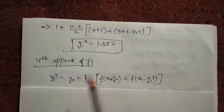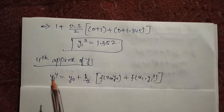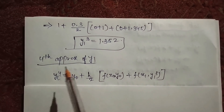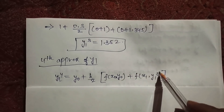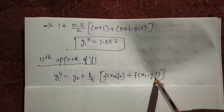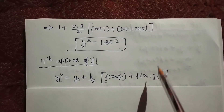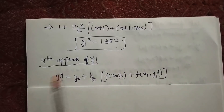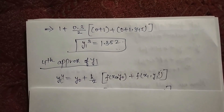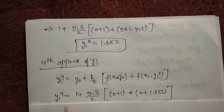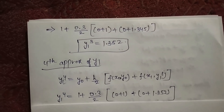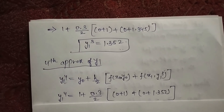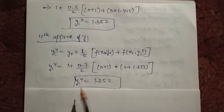Now we find the fourth approximate value — y1 to the fourth. Nothing else changes; only the LHS name increases and the previous approximate value inside the function is updated. We replace y1 squared with y1 cubed in the function. Keep x0, y0, h the same, substitute the function values from the differential equation, put in all direct values, and solve to get y1 to the fourth.